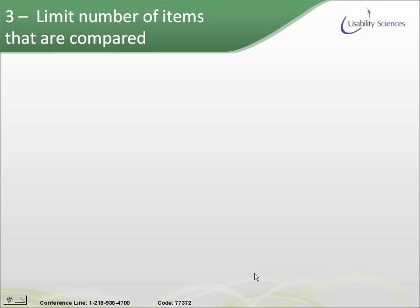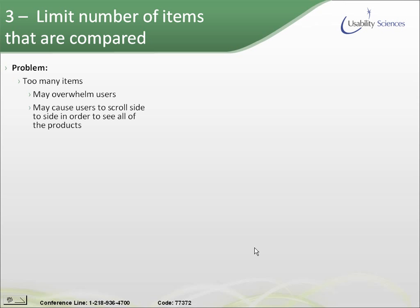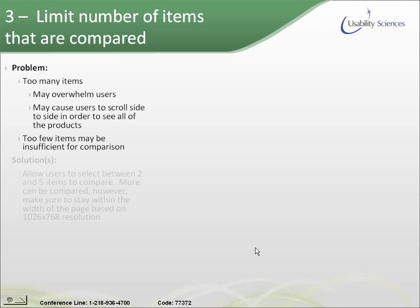Number three: limit the number of items that are compared. Now this one gets a little tricky. If you have too many items, you might overwhelm users, and it may cause users to scroll side to side in order to compare all of the products. But too few items might be insufficient for comparison — they might not have enough information or feel like they can't compare enough to get a good sense of what the best product is for them.